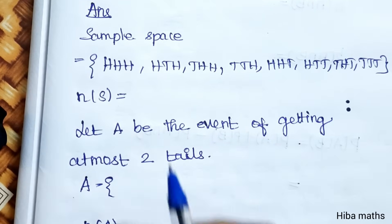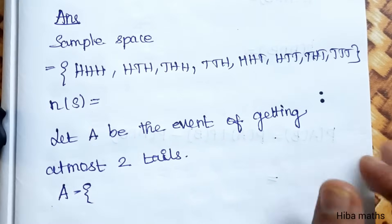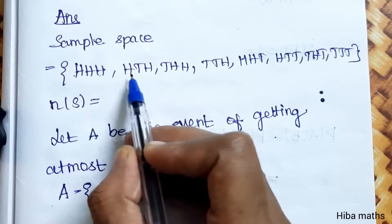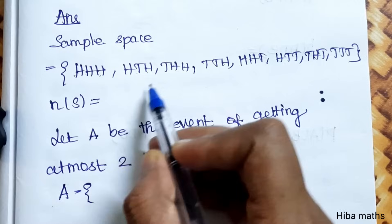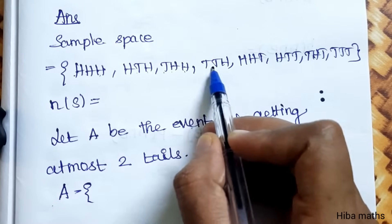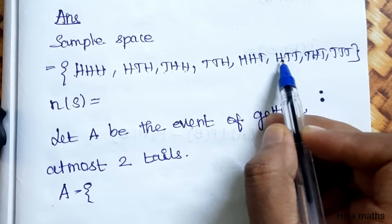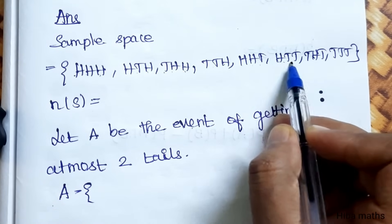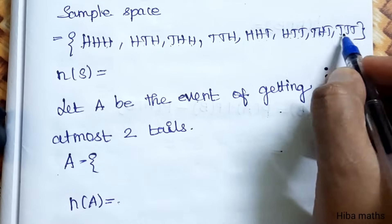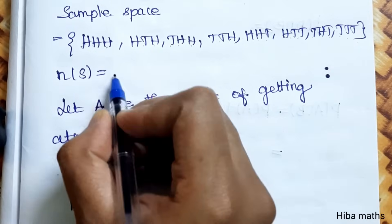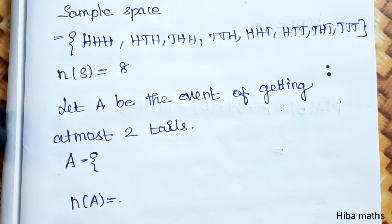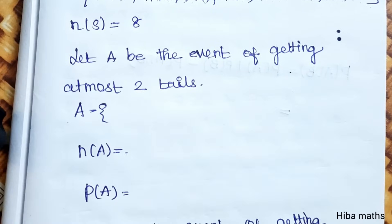The sample space: when 3 coins are tossed, the outcomes are HHH, HHT, HTH, HTT, THH, THT, TTH, TTT. Total sample space is 8.